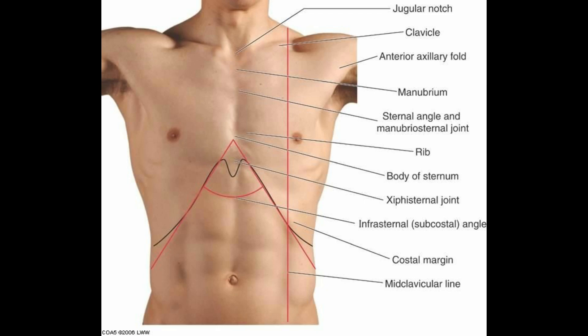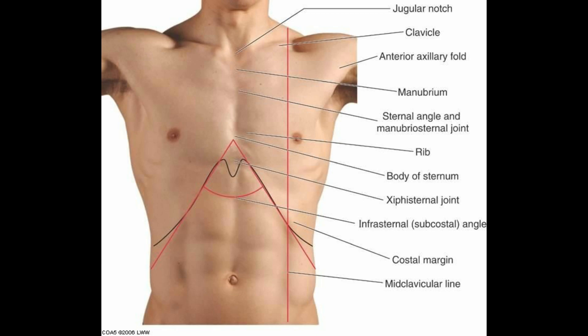Next, we have a picture of the thorax and some of its surface landmarks. We have the jugular notch, the manubrium — which is part of the sternum — and the clavicle. Notice the red line: the mid-clavicular line. At the fourth and fifth intercostal space on the mid-clavicular line is where we find the apex beat, also known as the point of maximum impulse from the heart. We can also see the sternal joint, the xiphoid process, and the costal margin, formed by the costal cartilages of the seventh to tenth ribs.